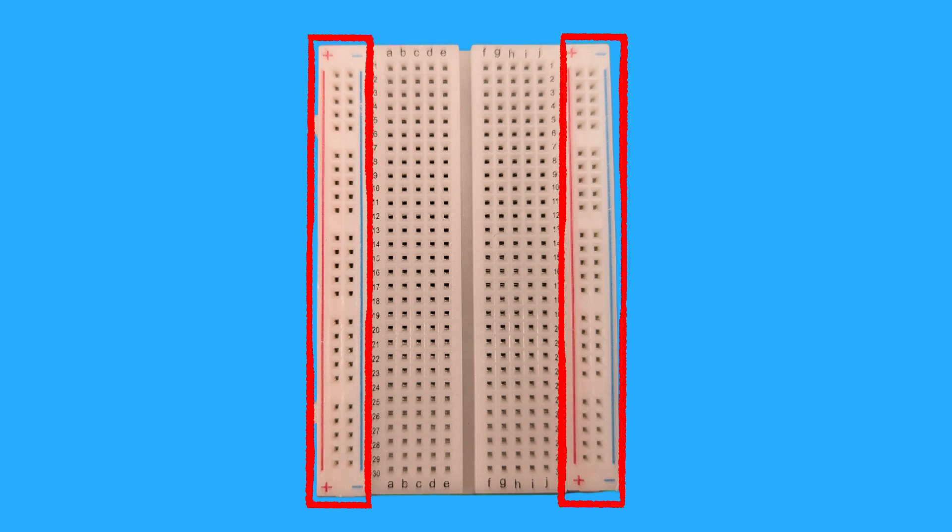Typically, you'll connect the positive terminal of your battery or power source to the red rail and the negative terminal to the blue or black rail.